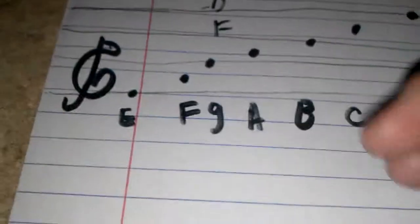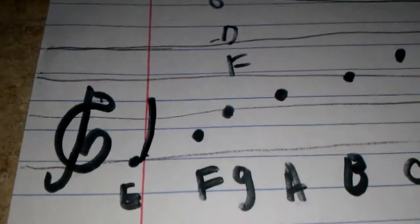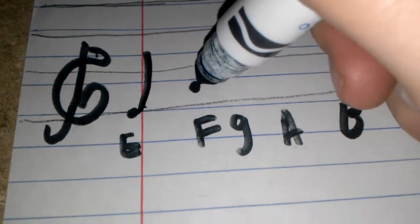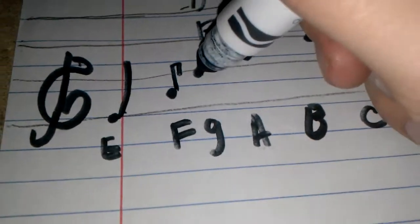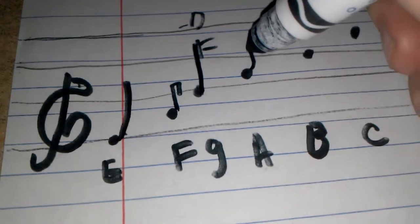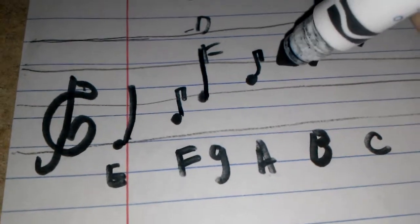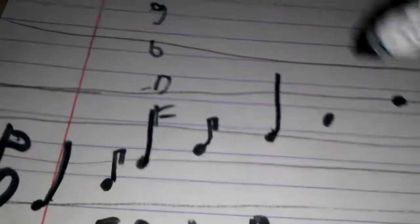So if I had a note E, if you see it like this, it would be E. If you had one like this, it would be F. If you had one like this, it would be G. If you had one like this, it would be A. If you had one up here, it would be B.